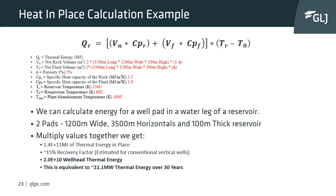We'll now do an example heat in place calculation using EGS horizontal wells, since horizontal wells produce much more than vertical wells. For an example of two pads — 1,200 meters wide, 3,500 meter horizontal sections, 100 meter thick reservoir — we calculate the net rock volume and net fluid volume using porosity, with generic values for specific heat capacities. At a predicted reservoir temperature of 130°C, re-injecting at 60°C, and a minimum plant temperature of 100°C, calculating over 30 years gives about 21 megawatts of thermal energy using a 15% recovery factor based on conventional vertical wells.